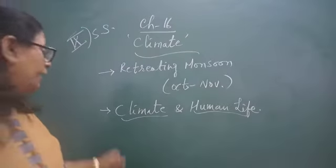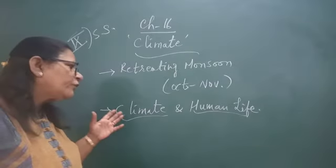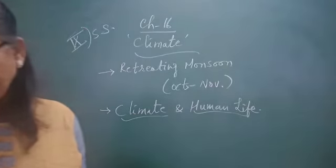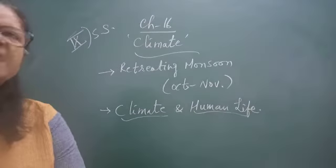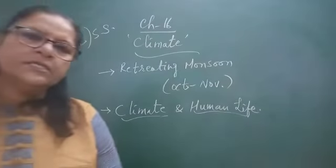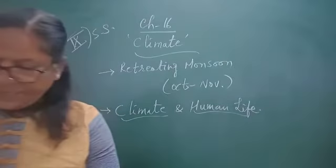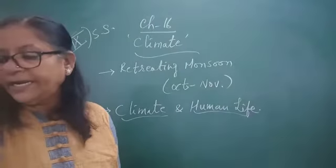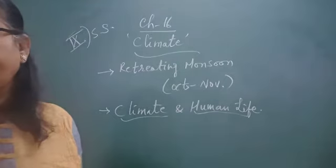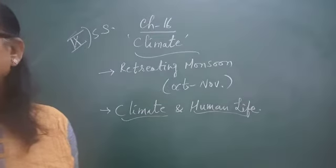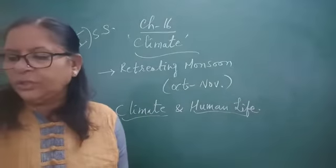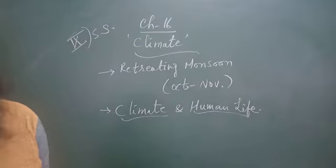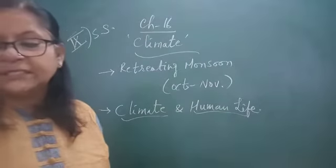Now, climate and human life. What is the effect of climate on human life? You know that the climate of India is monsoonal type, meaning there are mainly three seasons: summer, winter, and rainy season. Irregularity and uncertainty are its characteristics, which have a profound impact on the climate, food, lifestyle, nature of people, and agriculture.